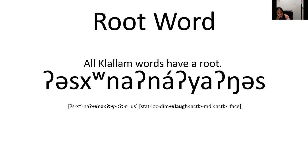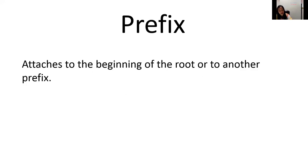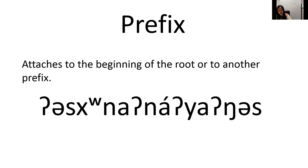The units of meaning that can be attached to a root in Klallam include prefixes and suffixes. The prefix attaches to the beginning of the root or to another prefix. The word for 'smiling' has two prefixes — the 'us' prefix and the locative 'noh' prefix, which makes the word refer to a location.